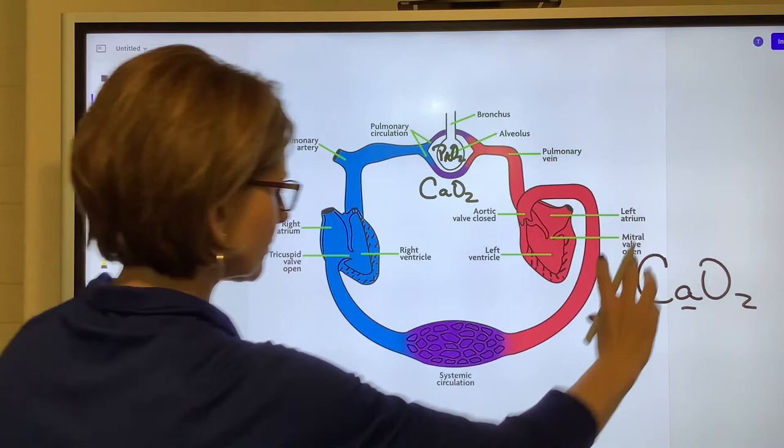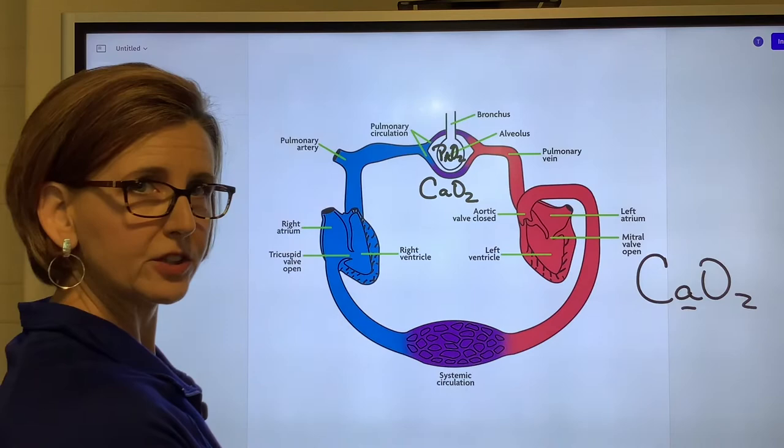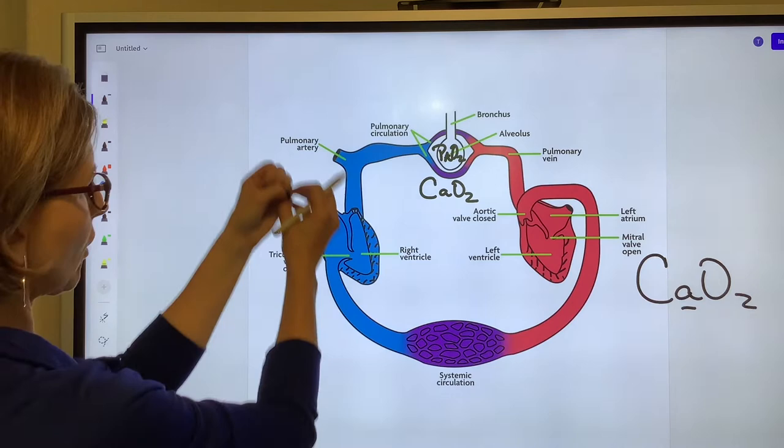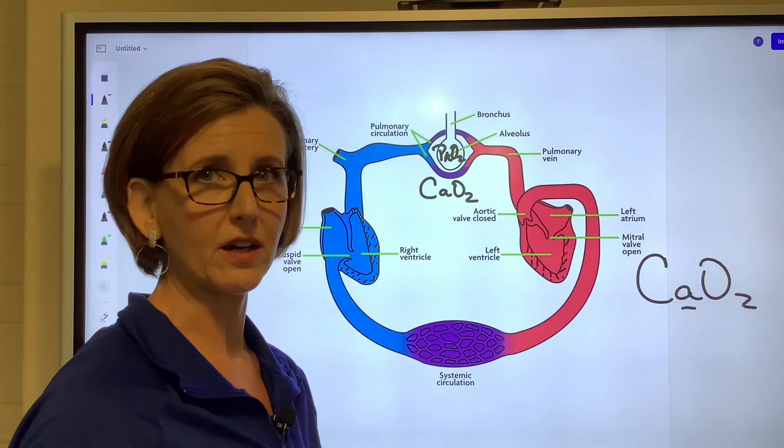So this blood travels to the tissues of the body. The tissues extract the amount of oxygen that they need. And then this blood continues to come back to the right side of the heart where it is deoxygenated. Now, when I say deoxygenated, that doesn't mean all of the oxygen is gone. There is still a little bit of oxygen.